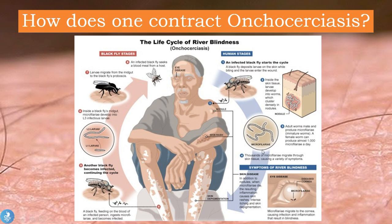The last stage of the human infection involves microfilaria being deposited in the skin. Now in the black fly stage, the black fly feeds on the blood of the infected person and ingests the microfilaria, becoming infected. Inside the black fly's midgut, the microfilaria develop into infectious larvae again, which then migrate from the midgut to the black fly's proboscis — the point at which it pierces the skin. The infected black fly then seeks a blood meal from a host and the cycle continues.